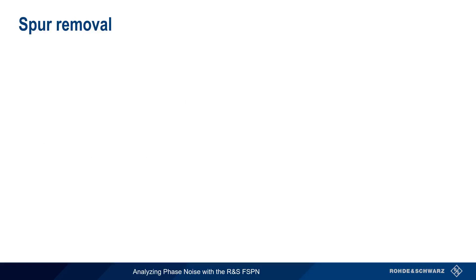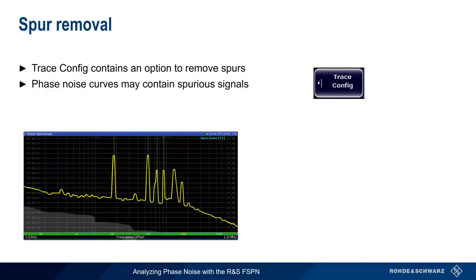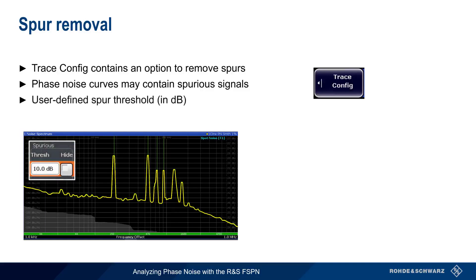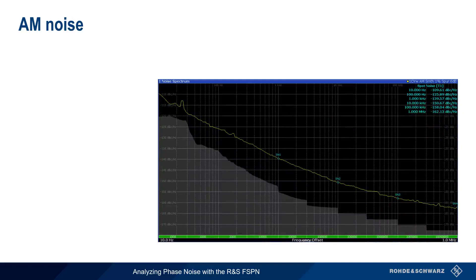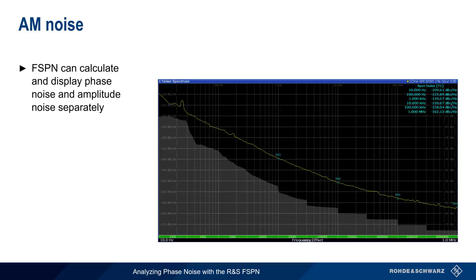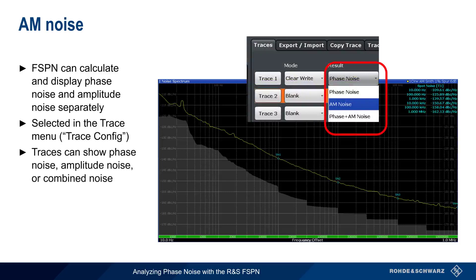Another display feature is spur removal, which is also enabled under Trace Config. Many phase noise curves contain spurious signals, which appear as peaks or spikes on the trace. Spurious signals or spurs are caused by interfering signals, not by phase noise, so we often want to remove them from our results. This is done by defining a threshold in dB. Enabling spur removal hides spurs which lie more than this number of dB above the trace. One last trace feature to be aware of is the ability to choose which type of noise to plot. The FSPN can separate phase noise and amplitude noise, and display the combined result, or plot them separately. In the Trace Config menu, we simply select whether we want phase noise, amplitude noise, or both.